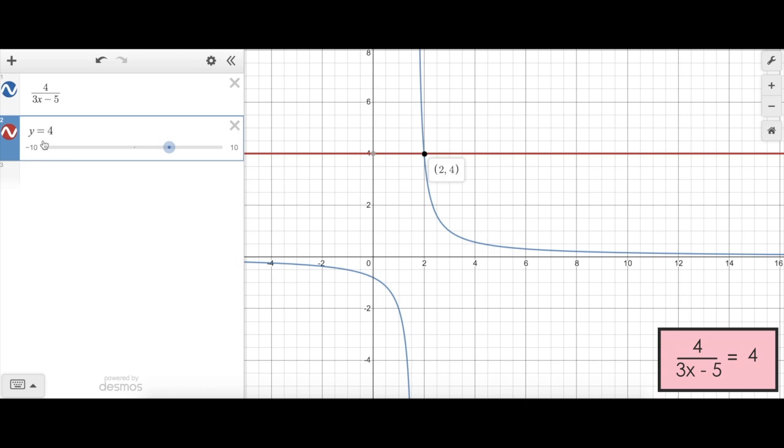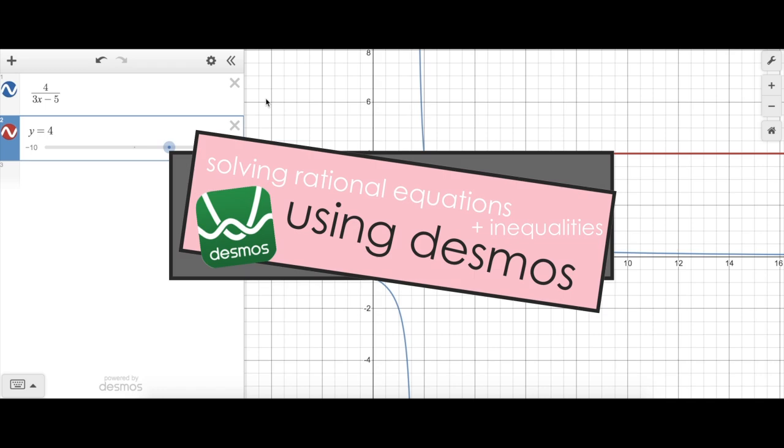I don't need to substitute 2 into my second function because no matter what x value you sub in, you will get 4, which is why y equals 4 is a horizontal line when graphed. So that's really it for solving rational equations using technology like Desmos.